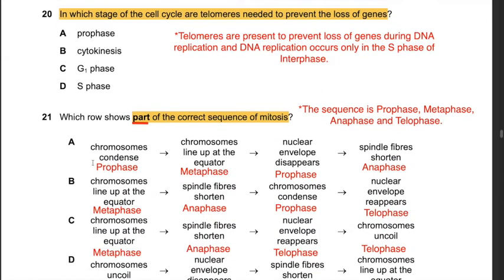Question 20: In which stage of the cell cycle are telomeres needed to prevent the loss of genes? Telomeres prevent loss of genes during DNA replication, and DNA replication occurs only in the S phase of interphase. Out of all the options, answer D has S phase. Therefore the answer is D: S phase.